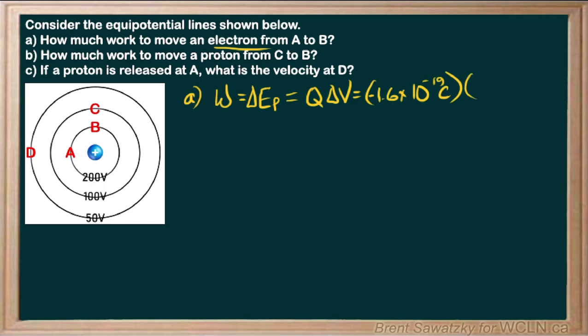Then we have delta V, the change in voltage here. We can look at it and see that going from A to B, we're on the same equipotential line, which means there's no change in voltage. Or if you'd rather go through the calculation, you could say the voltage at B minus the voltage at A, 200 minus 200 is 0. Either way, you end up with a 0 in there, and 0 times anything is 0. So we would say that that is 0 joules of work.